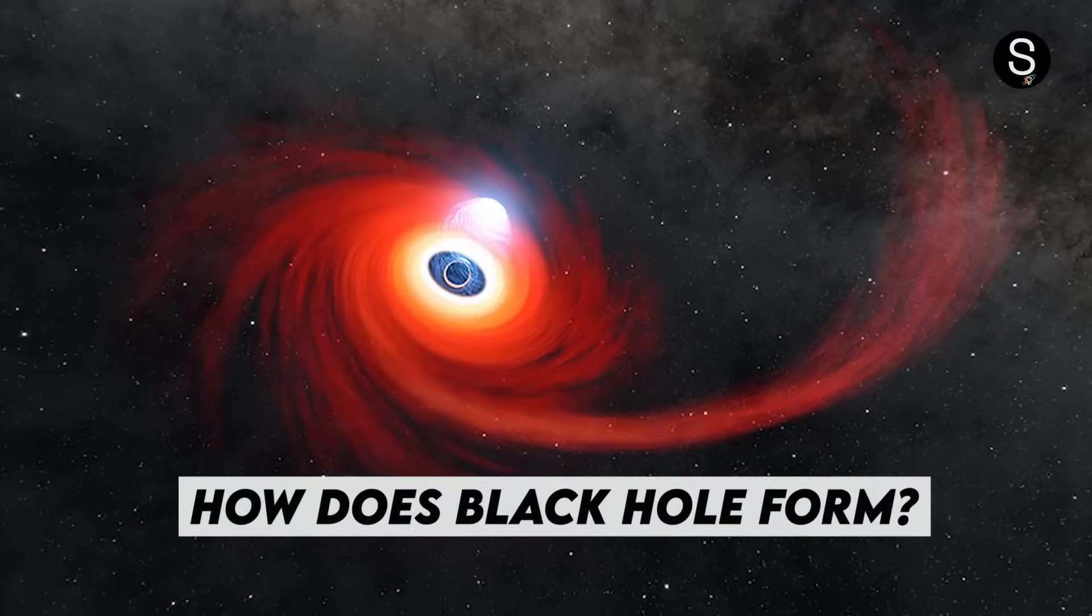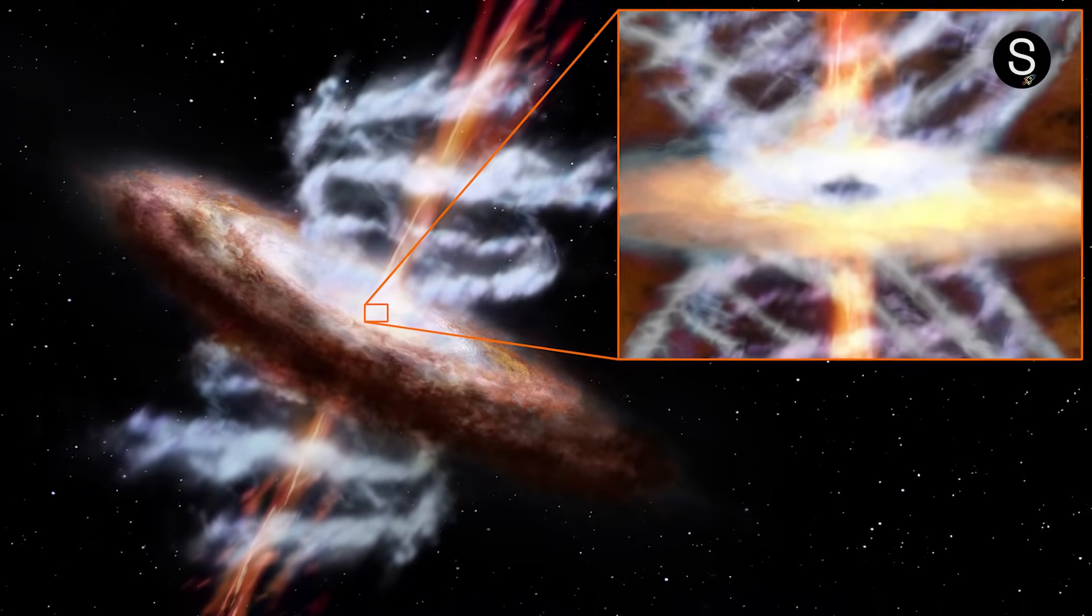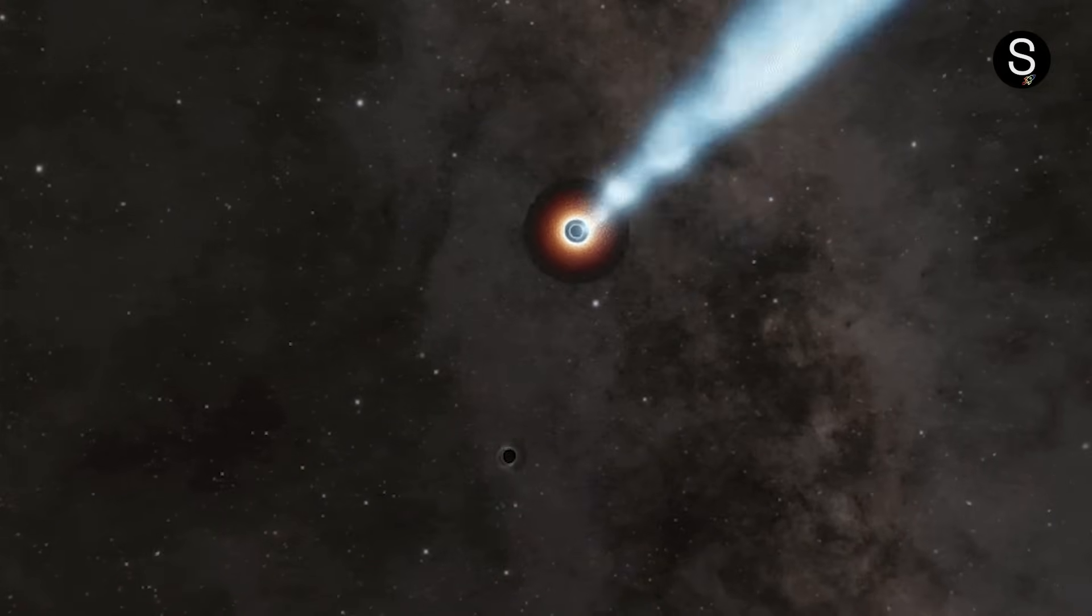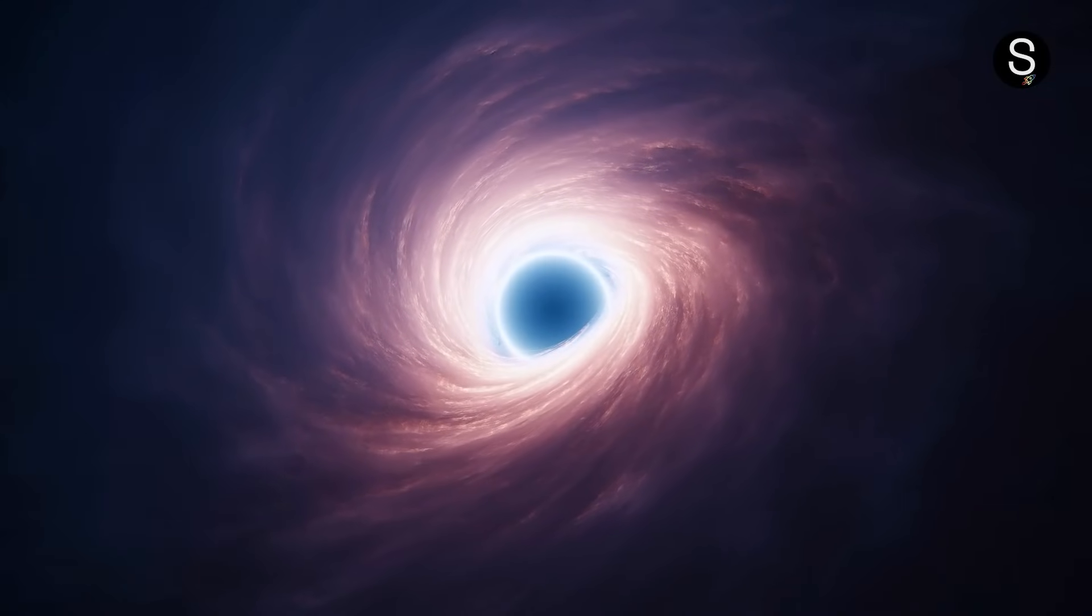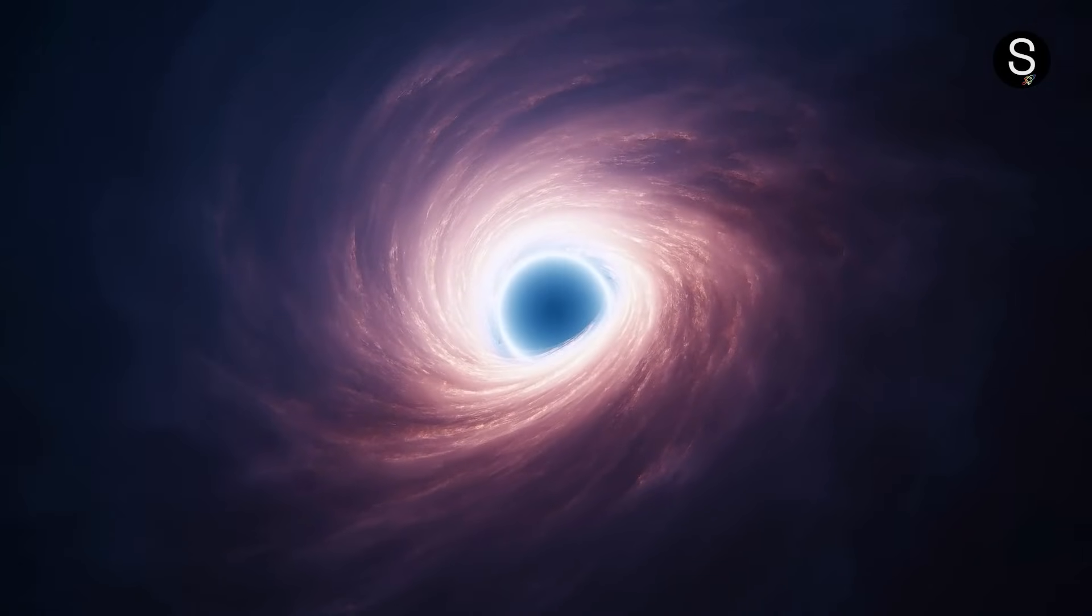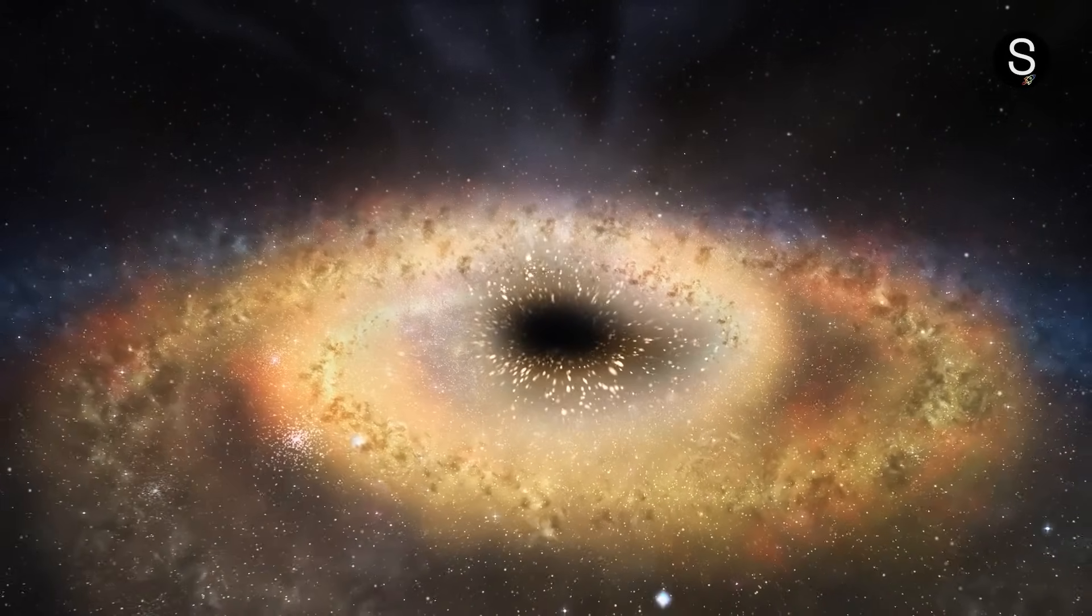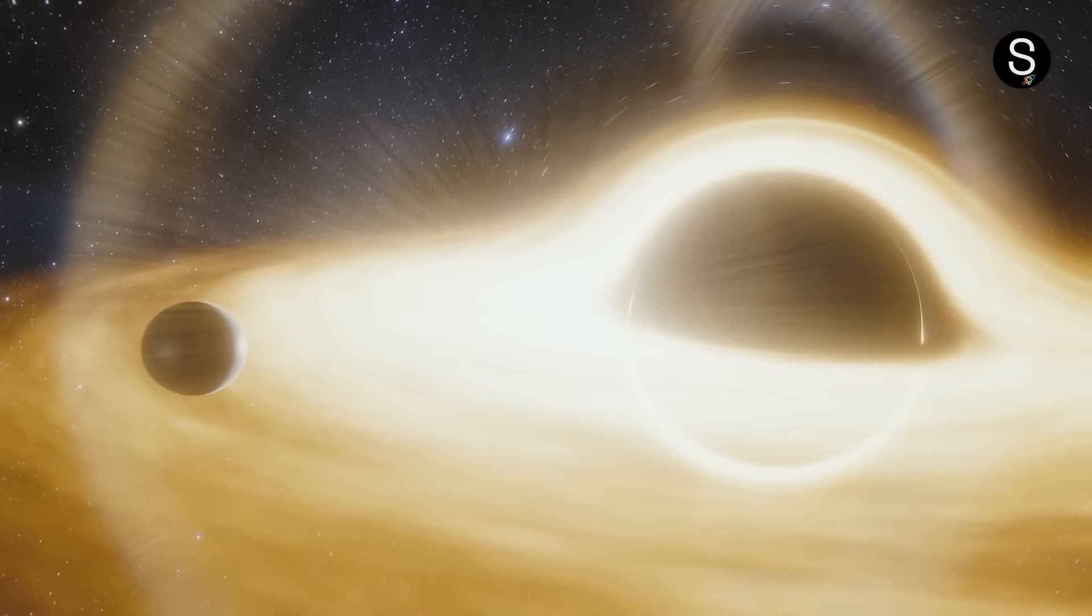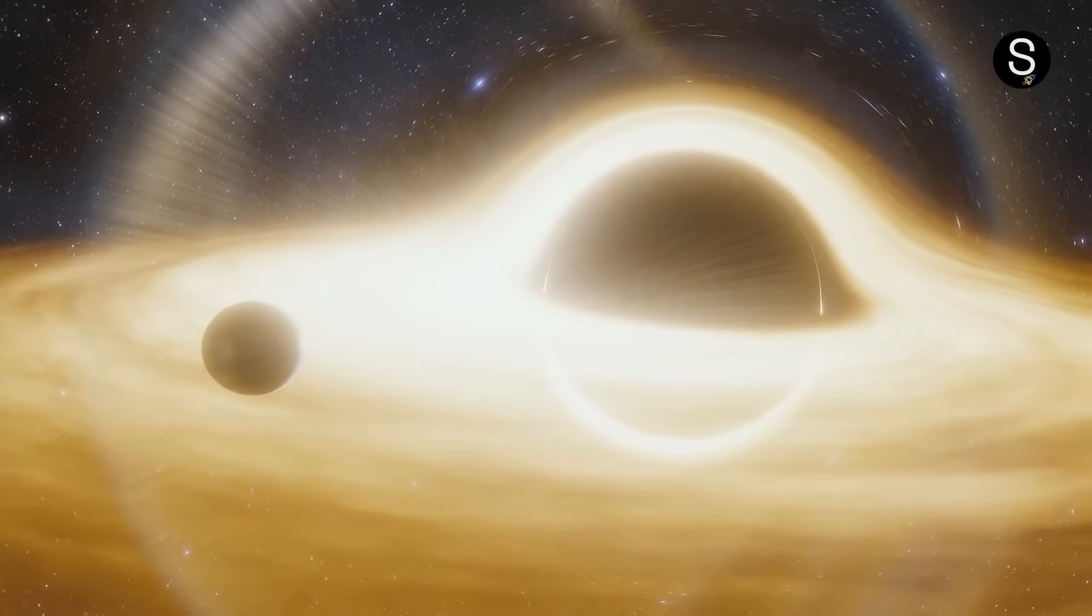How does black hole form? Here's the answer to it. When a large star collapses in on itself, black holes develop. The gravitational force becomes so tremendous that nothing can escape it, not even light. The event horizon is defined as the point beyond which escape is impossible. When an object exceeds the event horizon, it becomes trapped in the black hole's gravitational attraction. The stronger the gravitational pull gets as the item approaches the center or singularity.